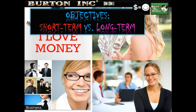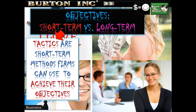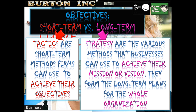We have short-term and long-term objectives. Short-term objectives are referred to as tactics — short-term methods a firm can use to achieve their objectives. Long-term objectives relate to strategy. So: tactics are short-term, strategy is long-term. Strategies are the various methods that businesses can use to achieve their mission or vision — they form the long-term plans for the whole organization. Strategy is what we want to achieve; tactics are how we're going to get there.